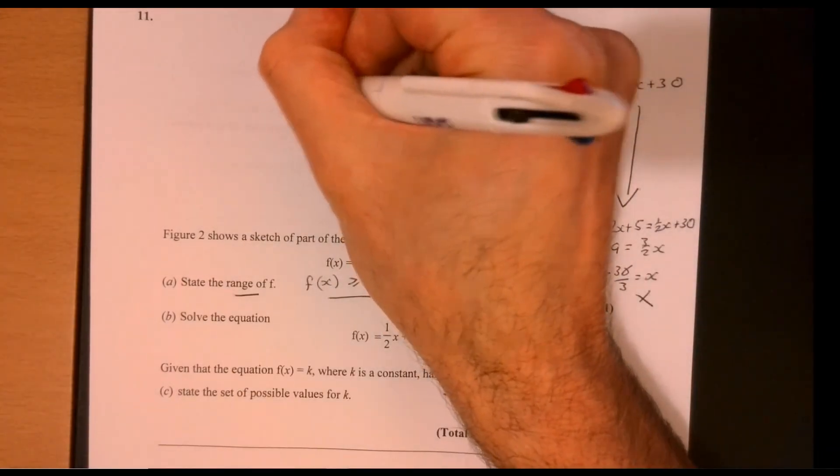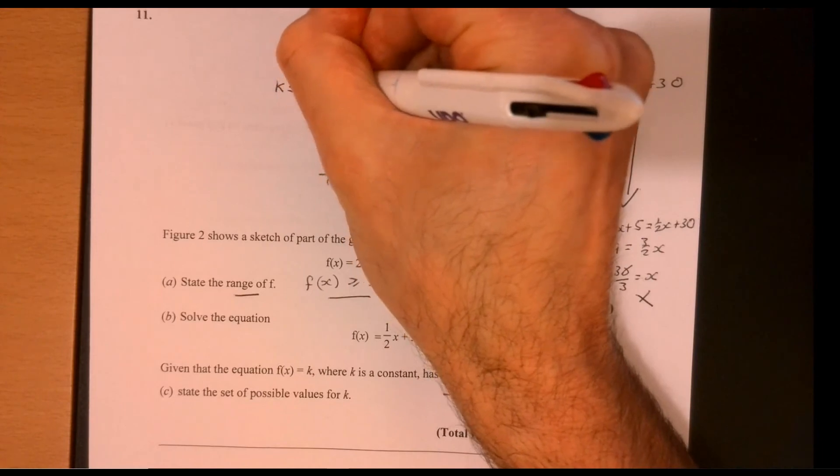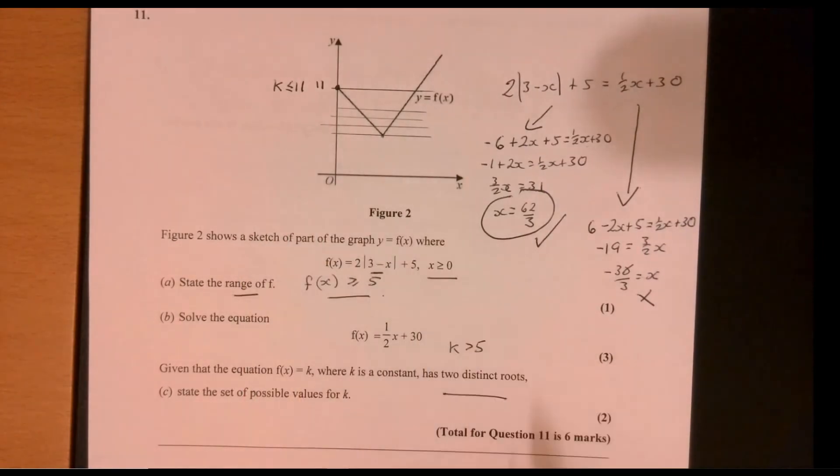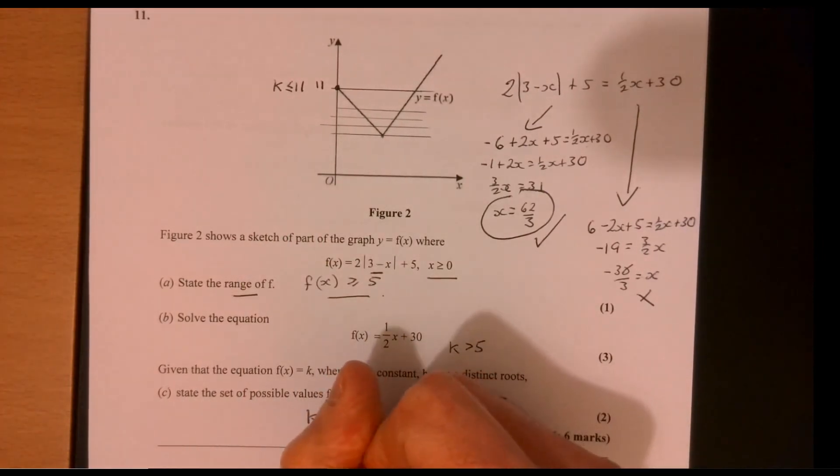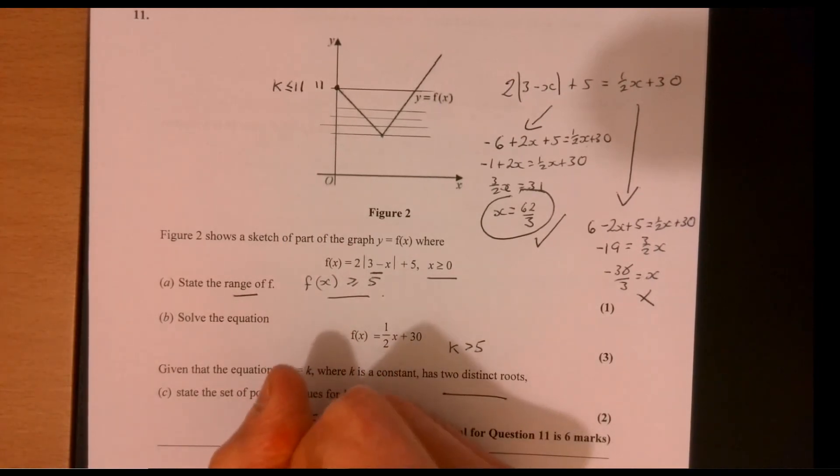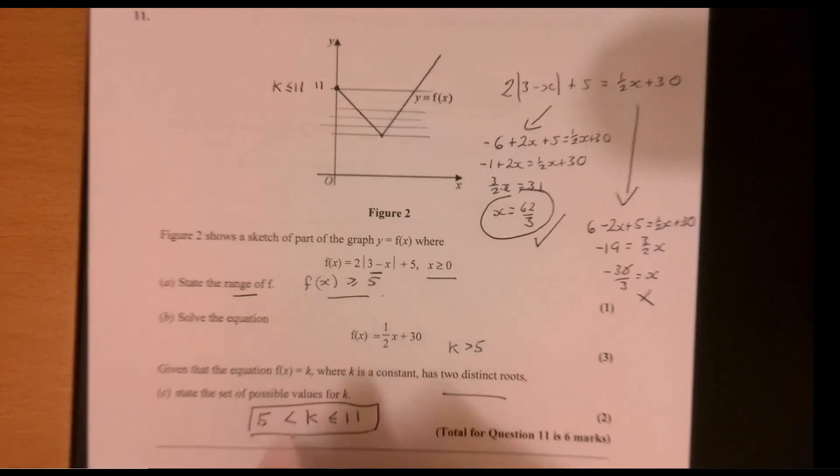So that point up there has got to be 11. So k have to be less than or equal to 11. So let's piece that in in one nice line. So k should be less than or equal to 11, and it should be more than 5.